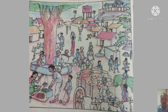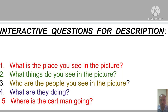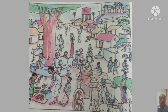Now look at the picture thoroughly. I will put you some interactive questions for writing the description. The first question: what is the place you see in the picture? I hope you are all well aware of that place and may have experienced it. The next question: what things do you see in the picture? The third: who are the people you see in the picture? The fourth: what are they doing — what are the people doing in the picture? And the last: where is the cart man going? Dear children, I hope you have observed the picture very keenly and have got in your mind some of the things, persons and places.